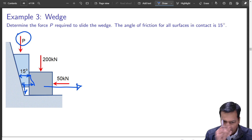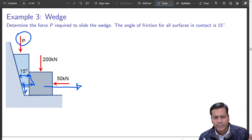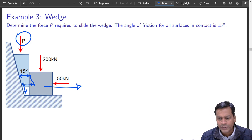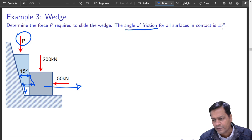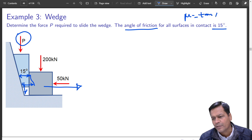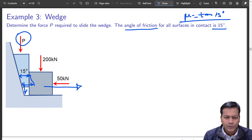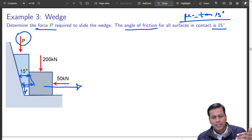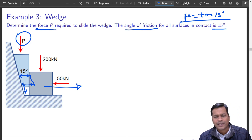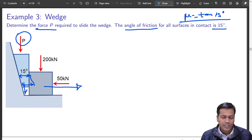Accordingly, we will draw the free body diagram. What is given: the angle of friction is 15 degrees. Now, what you have to do is determine the force P which is required to start sliding.